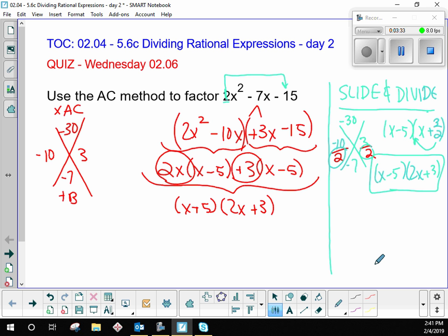Now, the grouping, the AC method here that we did in red, the pros about that is it makes sense logically. You're really just doing foil backwards. And so in that way, it's easy to remember what you're supposed to be doing. The con is, it's longer.